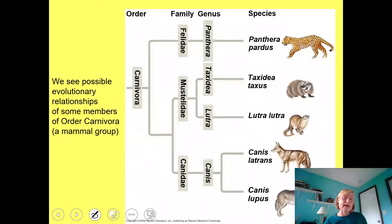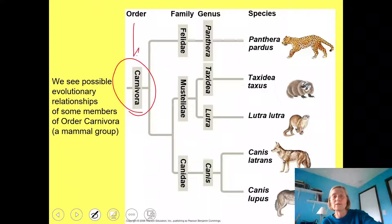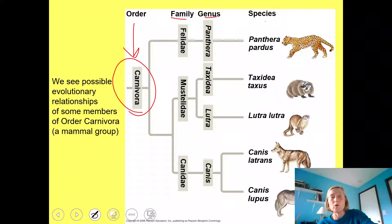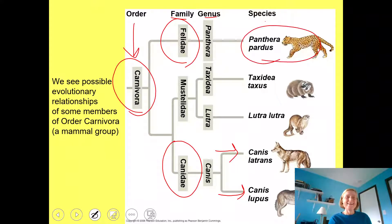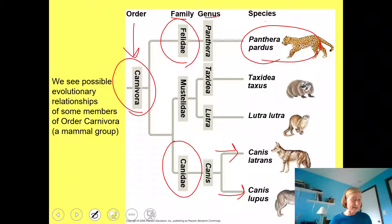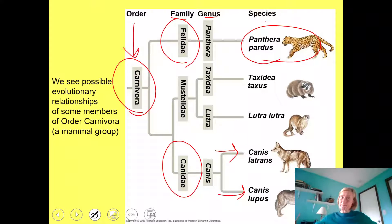What's interesting is that we can see evolutionary relationships in this ordering process. For example, looking at Order Carnivora — all mammals — you can see the family, genus, and species: the cat family, the dog family containing foxes and wolves, and all the big cats in their family. There are real evolutionary relationships embedded in this naming process, even if Linnaeus didn't necessarily intend that. He started classifying and organizing organisms by what they looked like; today we focus more on evolutionary relationships, but he started the process.